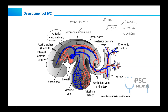Let me briskly give you the functions of these three major veins. The cardinal vein drains the blood from the whole body into the heart, carrying deoxygenated blood. The vitelline vein carries blood from the yolk sac. And the umbilical vein originates in the chorionic villi and carries oxygenated blood to the embryo. So the main function of the umbilical vein is carrying oxygenated blood.